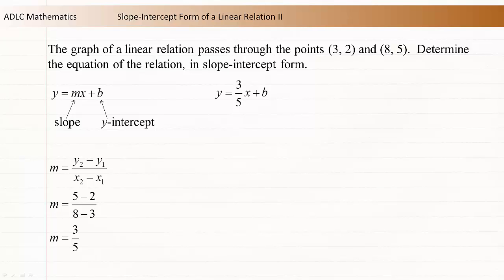Now substitute 3/5 for m in the slope-intercept equation. Next, we need to determine the b value. There isn't any information given that is directly related to the y-intercept. We can determine the b value indirectly.